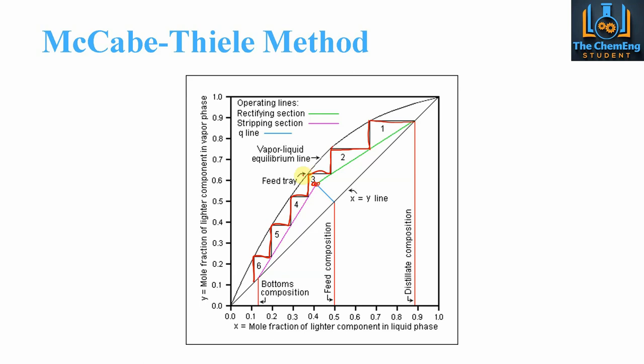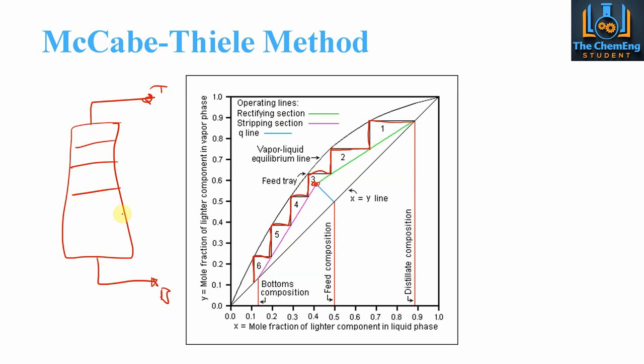The column would have a top and a bottom with 6 trays: trays 1 through 5 in the column itself, and the reboiler at the bottom denoted as tray 6. The feed would come in closer to the top — at tray 3. Changing the feed composition will change the number of trays, the feed tray position, and the characteristics of the rectifying and stripping sections.